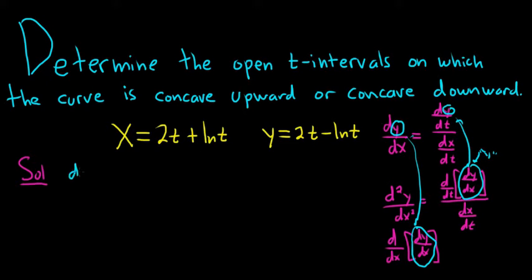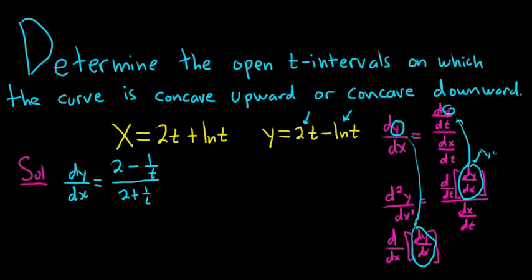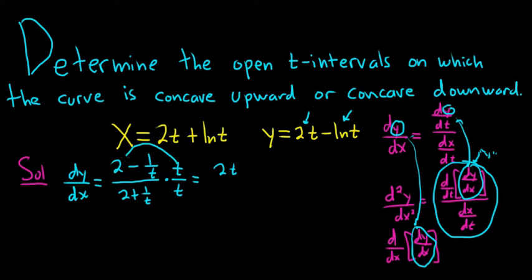So we have to start by working out dy/dx. Using the formula, that's dy/dt over dx/dt. The derivative of 2t is 2 and the derivative of ln(t) is 1/t, so dy/dt is 2 minus 1/t. For dx/dt it's the same thing except it's 2 plus 1/t. In the next step we'll have to differentiate this, so we can multiply by t/t — multiplying by 1 — to clean it up. Distributing the t gives 2t minus 1 on top and 2t plus 1 on the bottom.